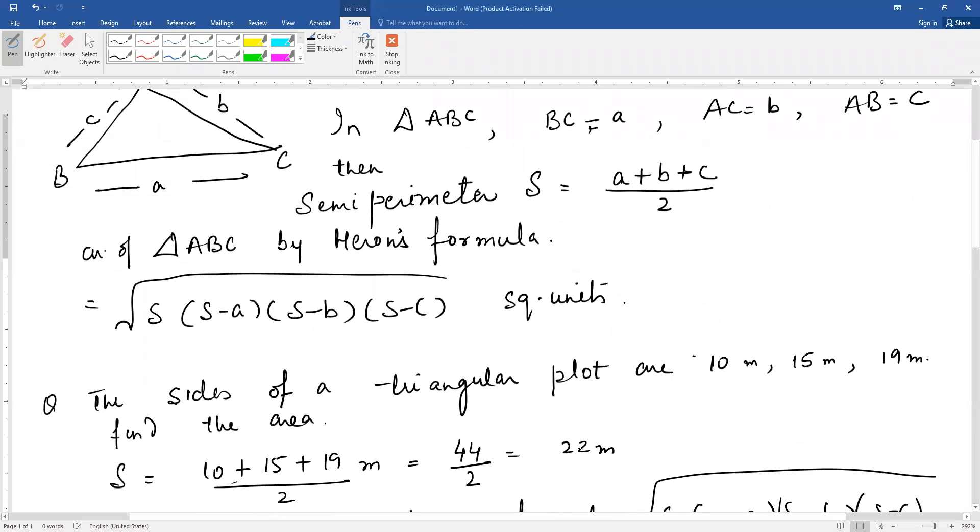Let's solve an example. The sides of a triangular plot are 10 meters, 15 meters, 19 meters. Find the area. First of all, we calculate S semi-perimeter. We add the sides and divide by 2. So 10 plus 15 is 25, 25 plus 19 is 44 by 2, that is 22 meters.